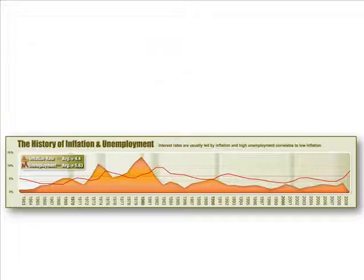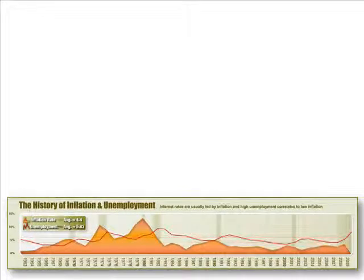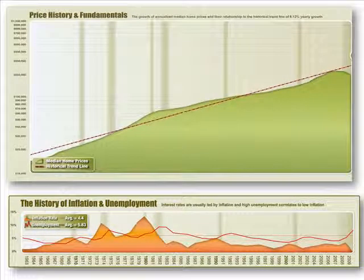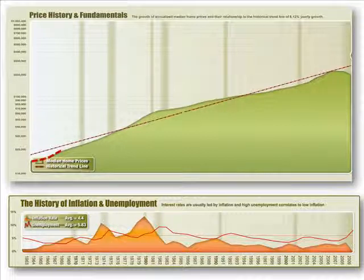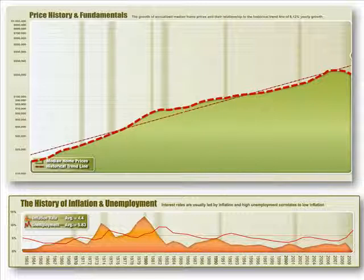We'll make some room on our screen here and bring up the price history graph. Somewhat surprisingly to many, until this most recent and severe recession, we can see that values across the country actually continued to rise right through each of these contractions — true even back in 1981, when mortgage rates crested over 18% and unemployment came close to double digits.